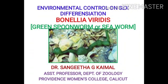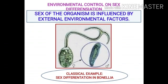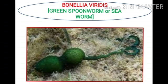Environmental control on sex differentiation as shown by Bonellia viridis. The sex of an organism is influenced by a number of factors, one of which is external environmental factors. This is well shown in the life cycle of Bonellia. Bonellia viridis, also known as the Green Spoon Worm or Sea Worm, is a marine animal that lives in the muddy bottom of the seashore. It belongs to Phylum Annelida, class Echiura.